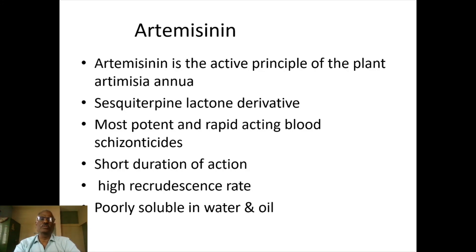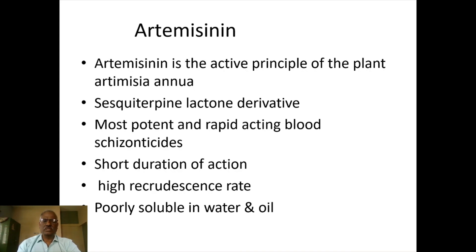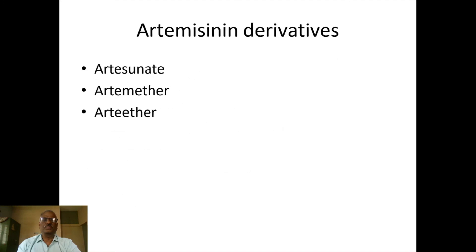There is another naturally occurring compound called artemisinin. Artemisinin is basically a sesquiterpene lactone. It is an important and rapid-acting blood schizonticide. It is poorly soluble in water. Artesunate, artemether, and arteether are derivatives of artemisinin, effectively used for the treatment of malaria.